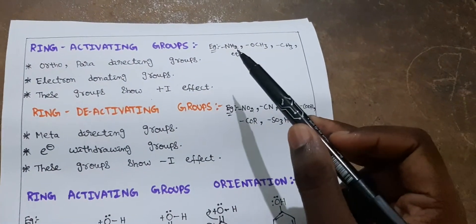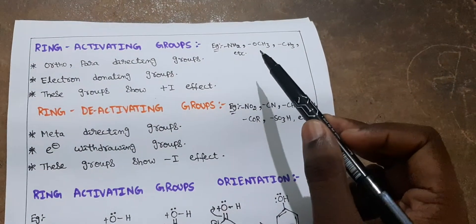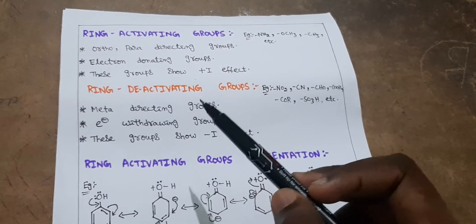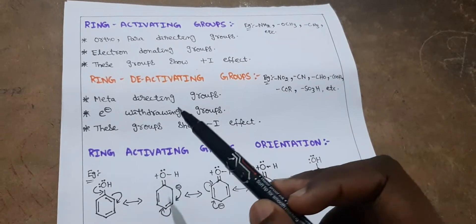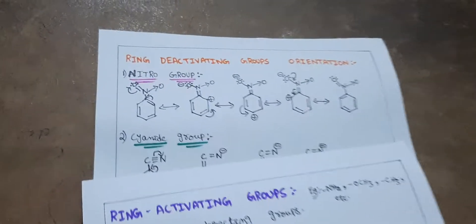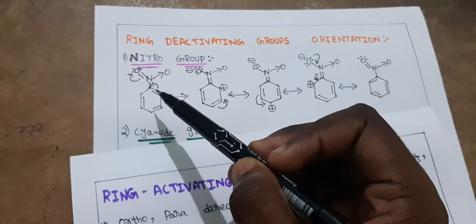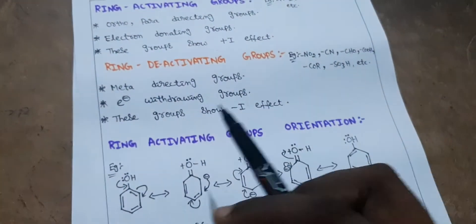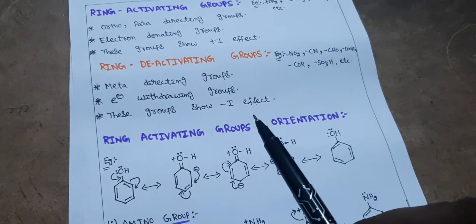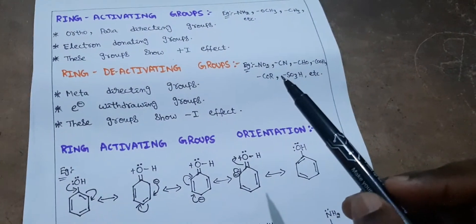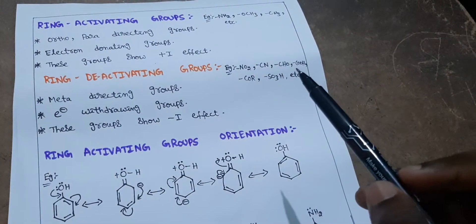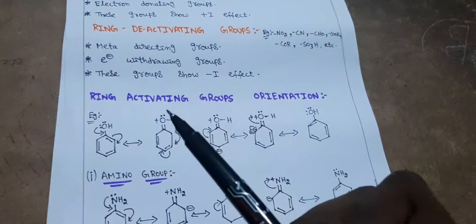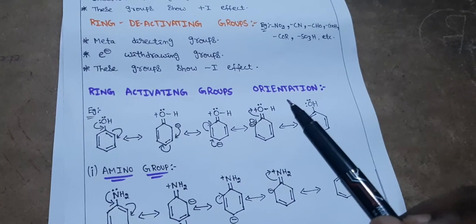Ring deactivating groups are meta directing groups and electron withdrawing groups. That means these groups withdraw electrons from the benzene ring, which is why they are known as electron withdrawing groups. These groups also show minus inductive effect (minus-I effect). Examples include NO2 (nitro), cyanide (nitrile), carboxylic acid, CHO (aldehyde), sulfonic acid, and so on.